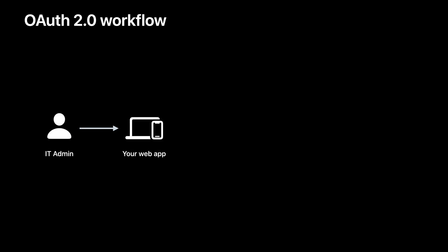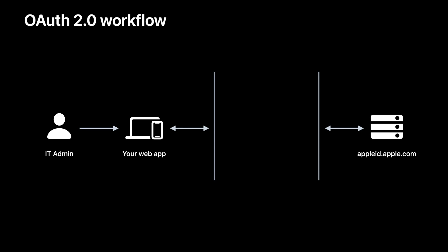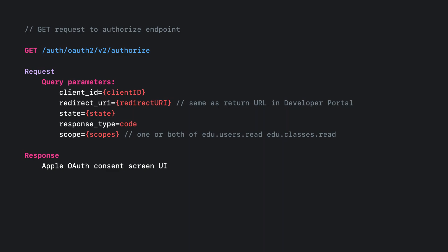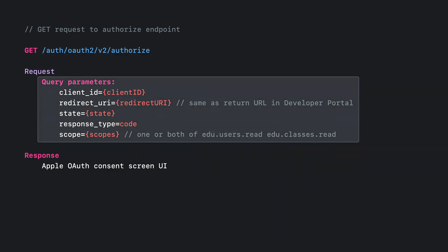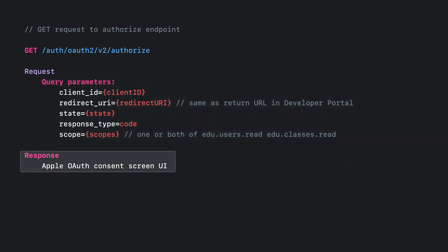The second step in the implementation journey is getting the access token through the OAuth 2.0 authorization flow. The IT admin first logs into your app, then interacts with your app to initiate the authorization flow — for example, by clicking a button named Connect to Apple School Manager. This starts a sequence of events following the OAuth 2.0 standard. The first step is to execute a GET API call to the authorized endpoint. The request takes in a few query parameters: the client ID, the redirect URI, the state, response type, and scopes. The response will be a redirect to the Apple OAuth consent screen to request access from the IT admin.